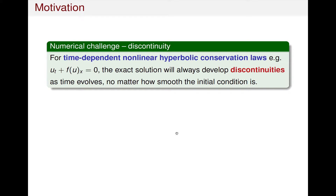The motivation for studying DG methods is relevant to two numerical challenges. The first one is about discontinuity. It is well known that for time-dependent nonlinear hyperbolic conservation laws, for example u_t plus f(u)_x equals zero, the exact solution will always develop discontinuities as time evolves, no matter how smooth the initial condition is. This will definitely increase the difficulty in designing numerical schemes for computing discontinuities.